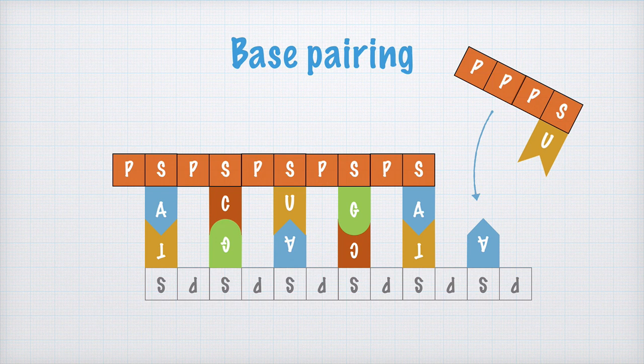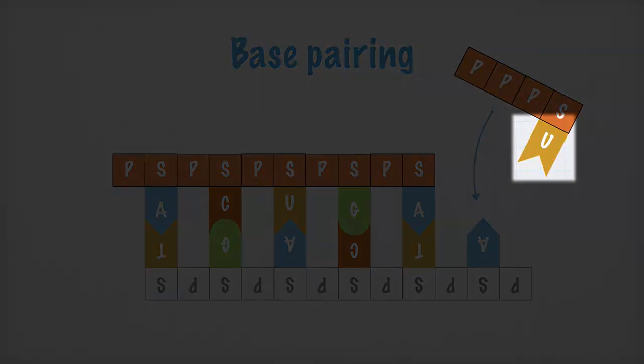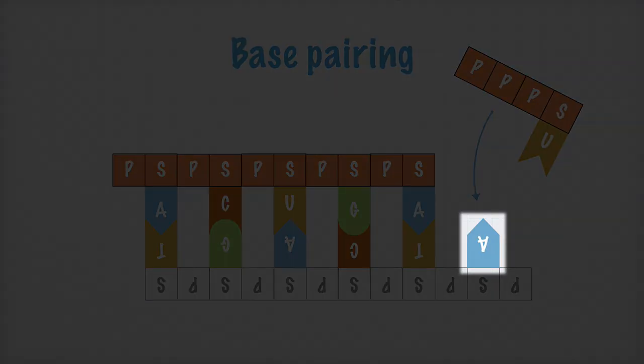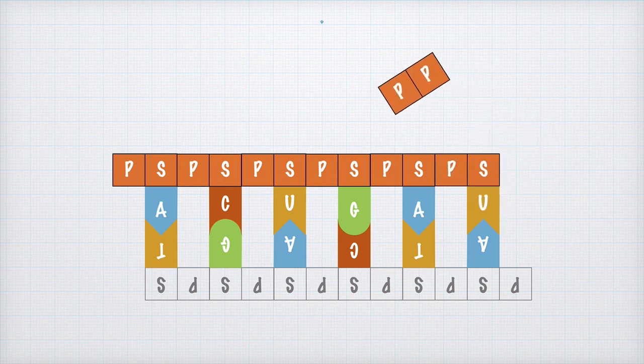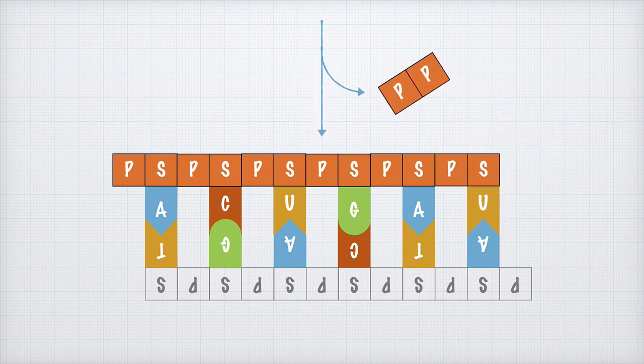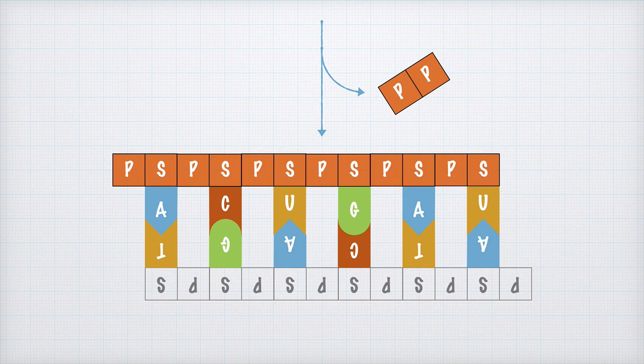What happens now is that the uracil base pairs with the adenine, at the same time as the two outermost phosphate groups are cleaved off like this. The RNA molecule becomes longer, it is elongated, and the process is repeated until the entire gene has been transcribed. Now if you copy this image too, you have a nice picture of how the RNA molecule is synthesized.